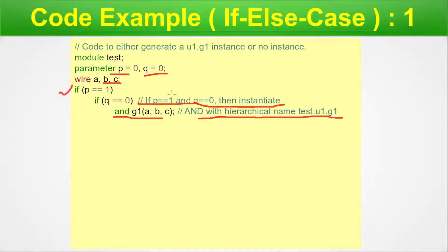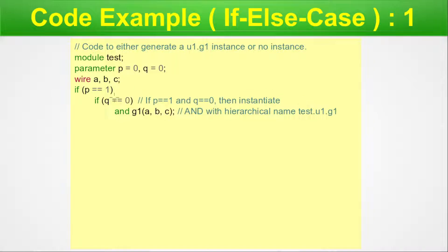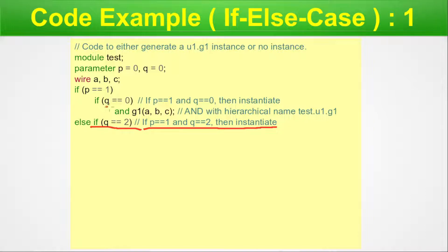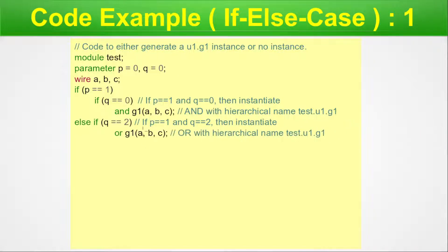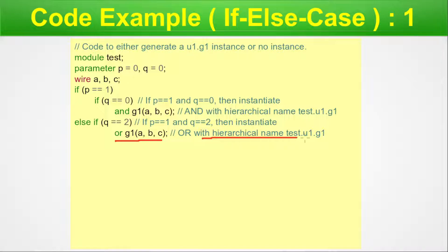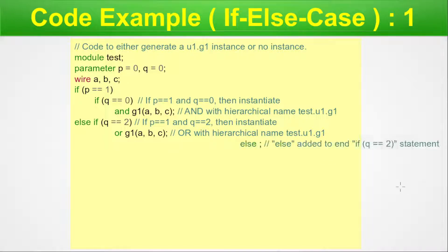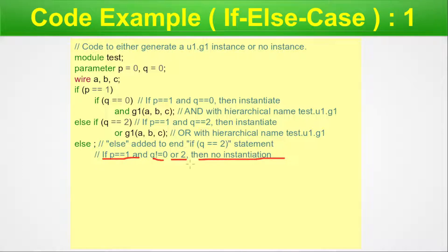So for p == 1 and q == 0, the AND gate instantiation occurs inside the generate block. Next, else-if checks q == 2: if p == 1 and q == 2, an OR gate is instantiated. For p == 1 with q neither 0 nor 2, the else branch produces no instantiation. This covers all sub-cases for p == 1.